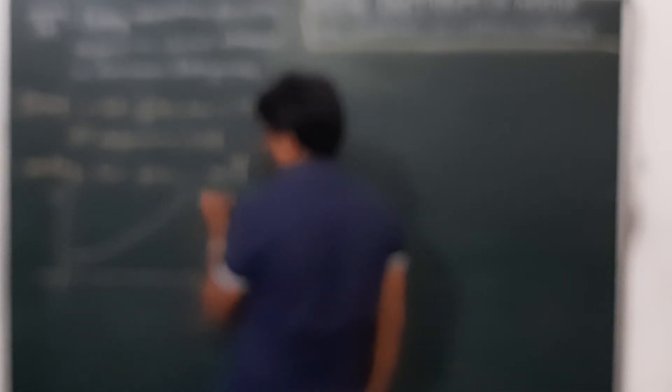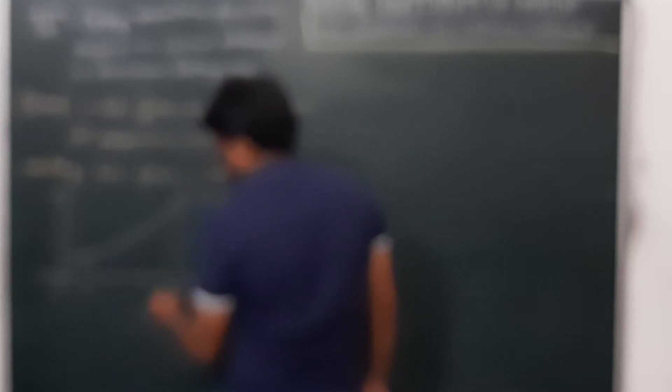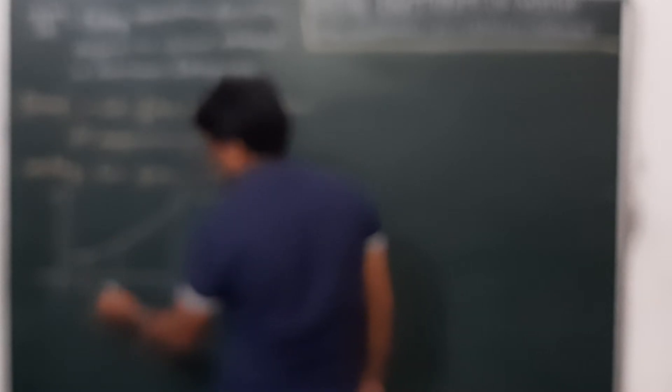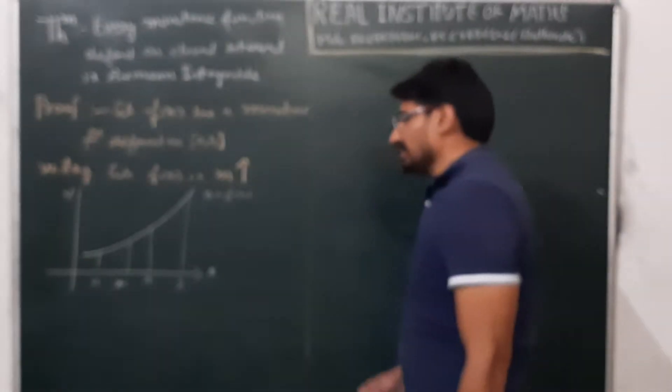This is the type of function we consider: this is the x-axis, this is the y-axis, and it is monotonically increasing — always increasing. So let us say here it is a, there it is b, and within the interval there is a point x_i minus 1 and there is x_i.